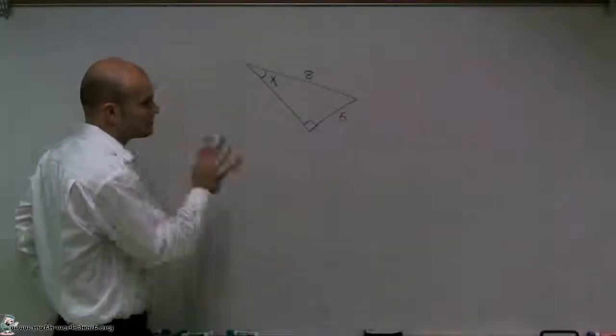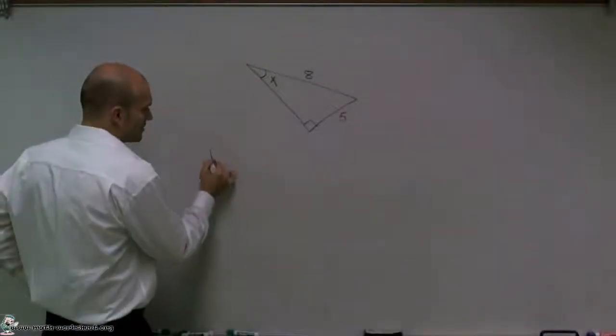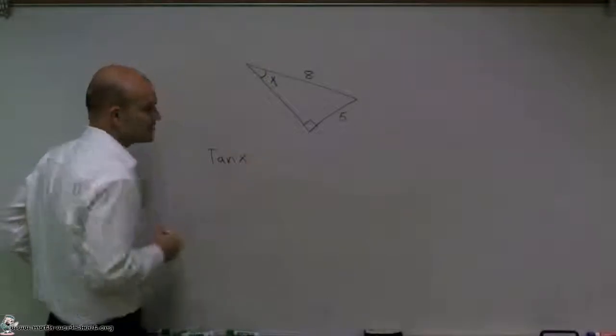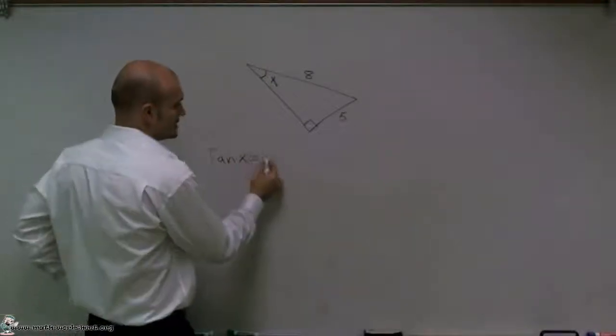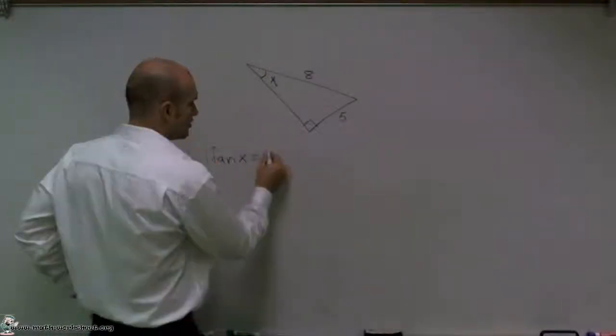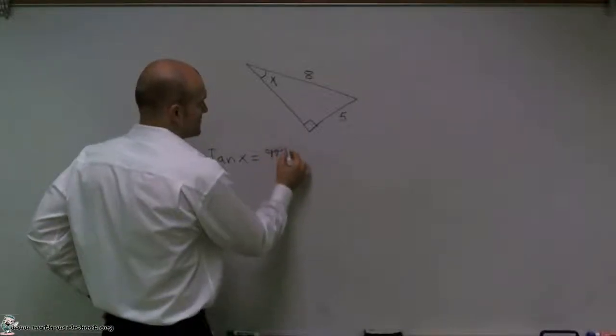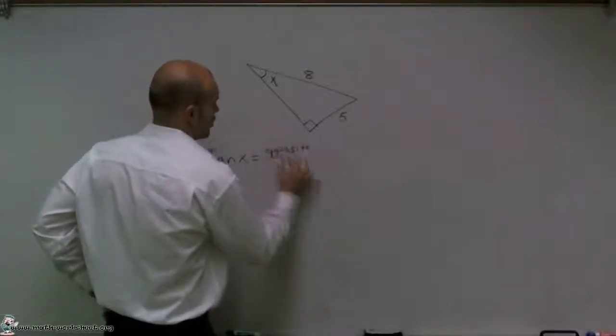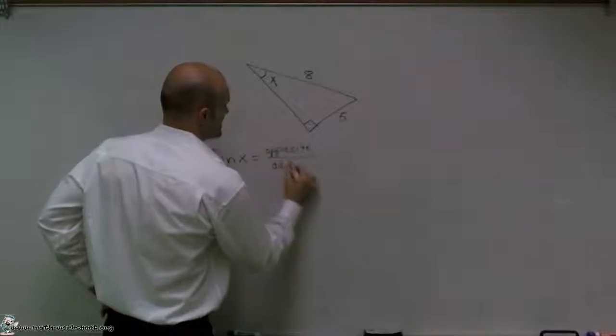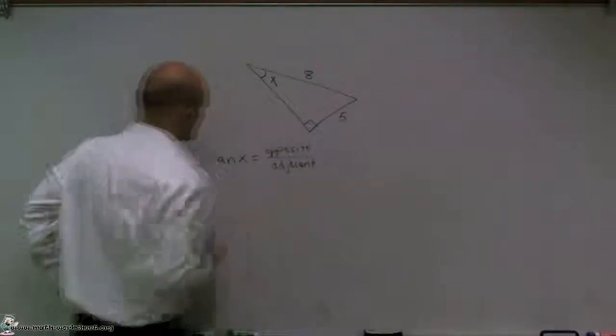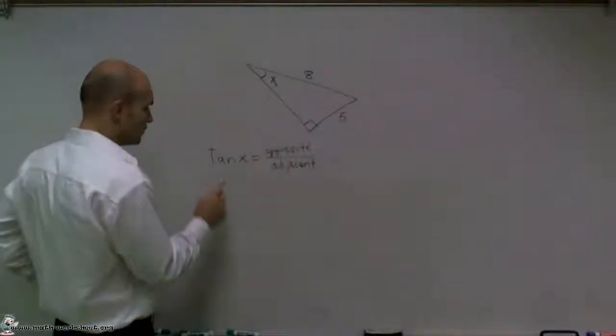When we have a trigonometric function, the first one I want to talk about is tangent. So tangent of an angle x is equal to the ratio of the opposite side over the adjacent side. That's one ratio, or one trigonometric ratio.